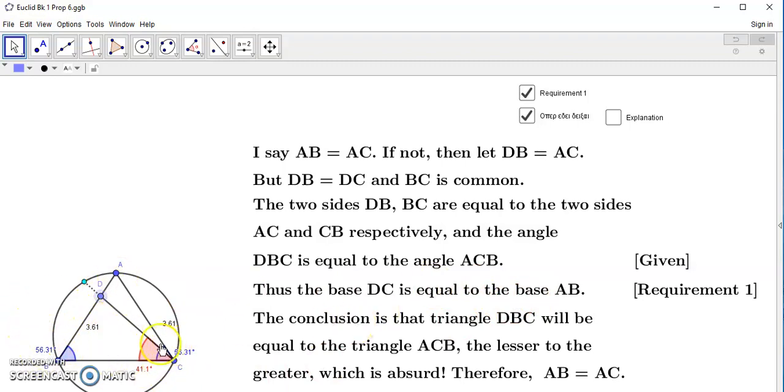And the conclusion is that the triangle DBC, the smaller triangle, will be equal to the larger triangle, lesser to the greater, which is absurd. So therefore, the assumption that AB is not equal to AC, this AB is not equal to AC, is false.